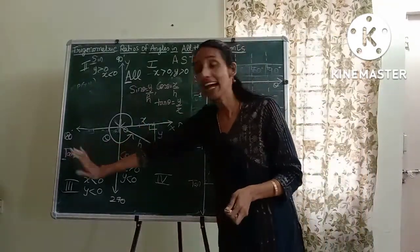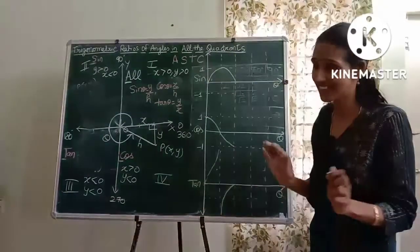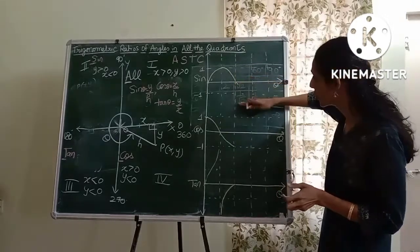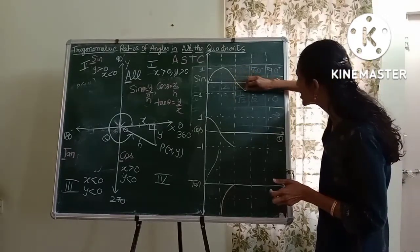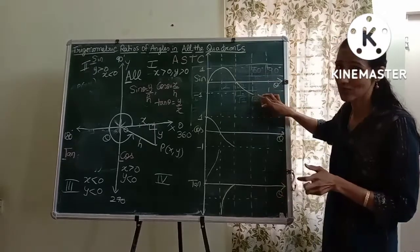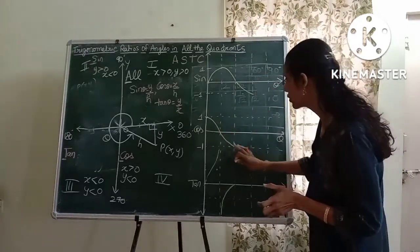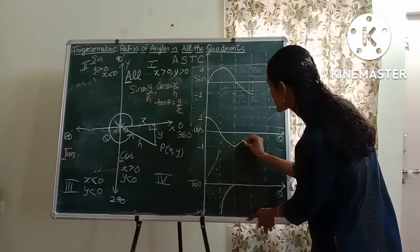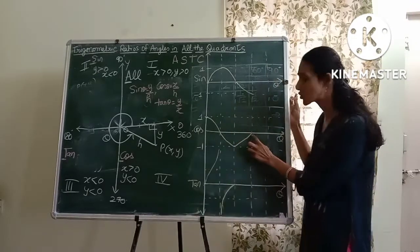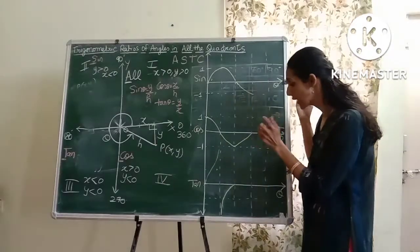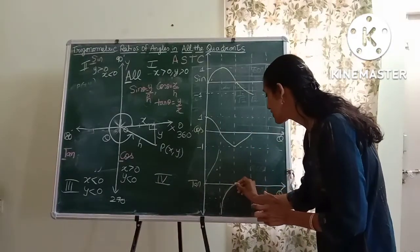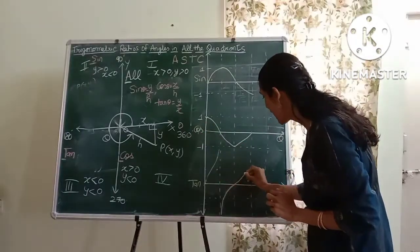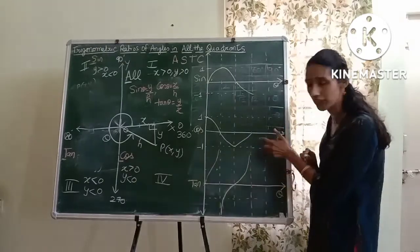In the third quadrant, tan is positive and everything else is negative. Sine continues to dip down, reaching minus 1 at 270°. Cos is negative but its value increases toward zero, reaching 0 at 270°. Tan rises positively in the third quadrant and tries to reach infinity as it approaches 270°.